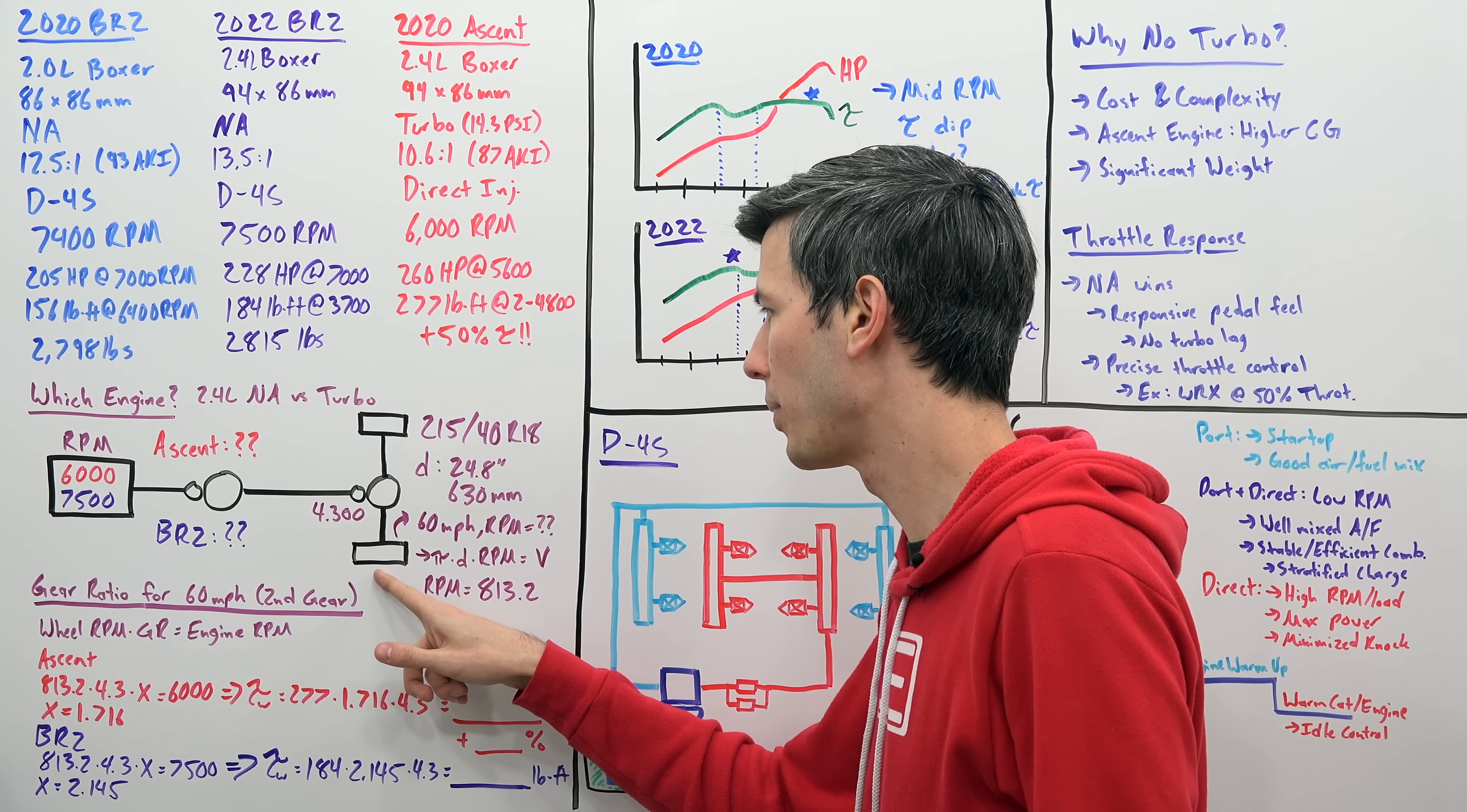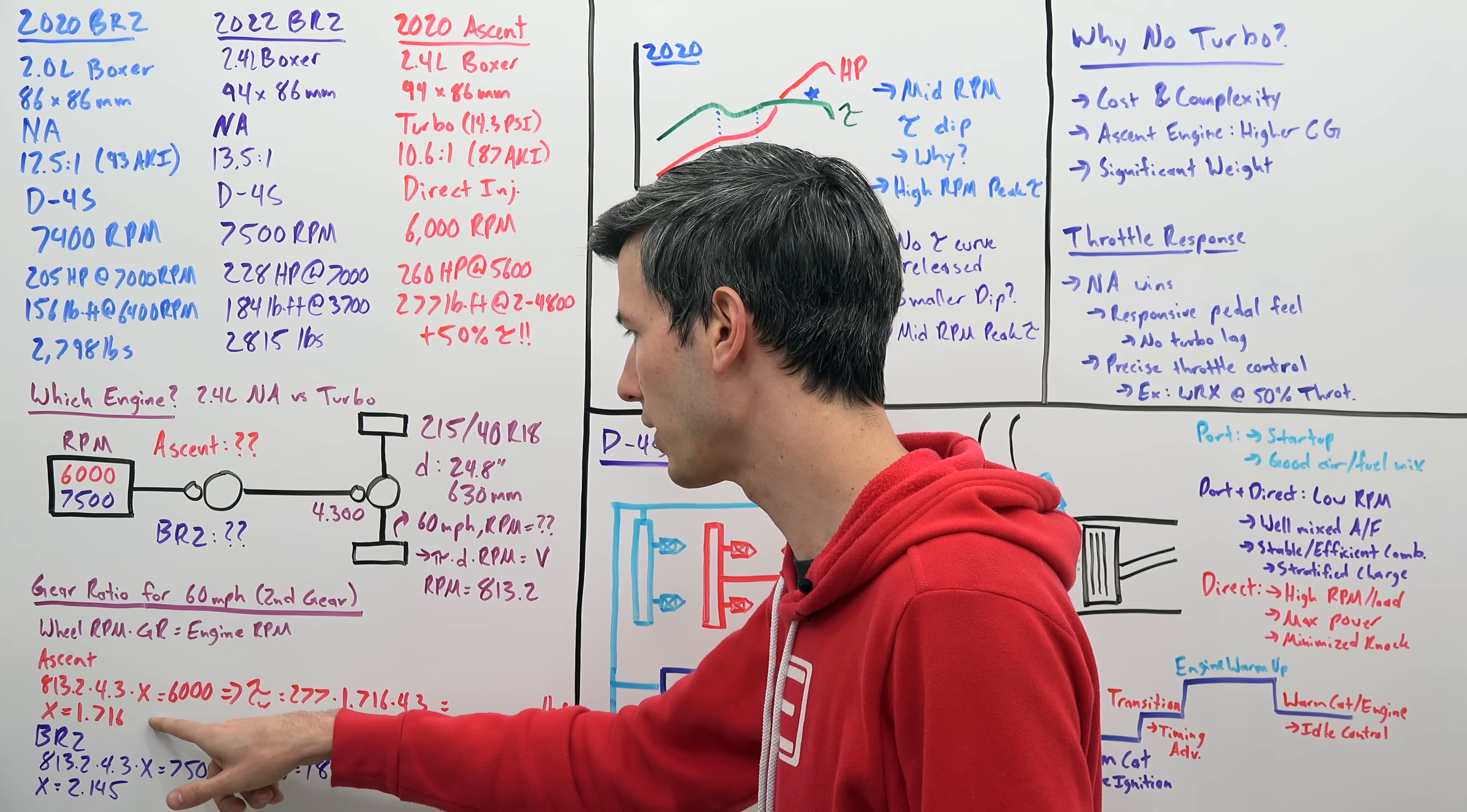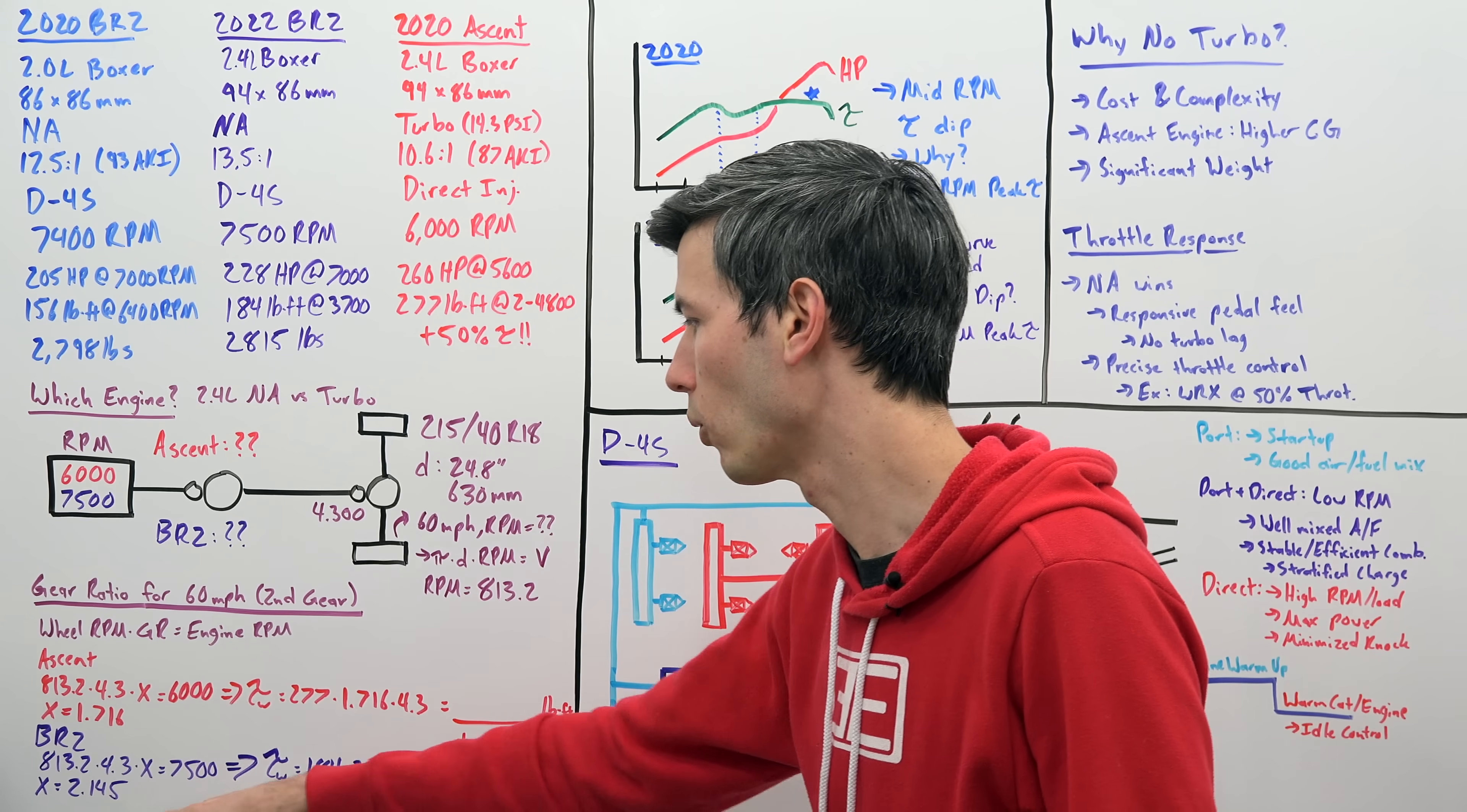If we know our wheel RPM, we can multiply that by our gear ratios and that will give us our engine RPM. So we know what our engine RPM is. We know what our wheel RPM is. We know what our final drive ratio is. The only ratio we don't know is our second gear, which we're hoping for 60 miles per hour. So we solve this equation. We get 813.2, we multiply that by 4.3, we multiply that by X, our second gear ratio, and we set that equal to our engine RPM, 6,000 RPM. And that gives us a gear ratio of 1.716 if we are using the ascent engine. And then we can do the same math using the BRZ engine. Same numbers except the only thing that changes is our RPM. Our red line is 7,500. So that gives us a gear ratio X is equal to 2.145.